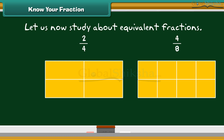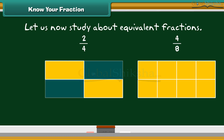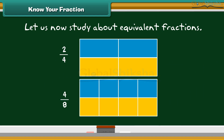Look at the rectangular boxes given below. In the first figure, two by four boxes are blue, while in the second figure, four by eight boxes are blue. Observe carefully. The blue colored parts of both the boxes are the same. This means two by four must be the same as four by eight. So, two by four and four by eight are equivalent fractions.